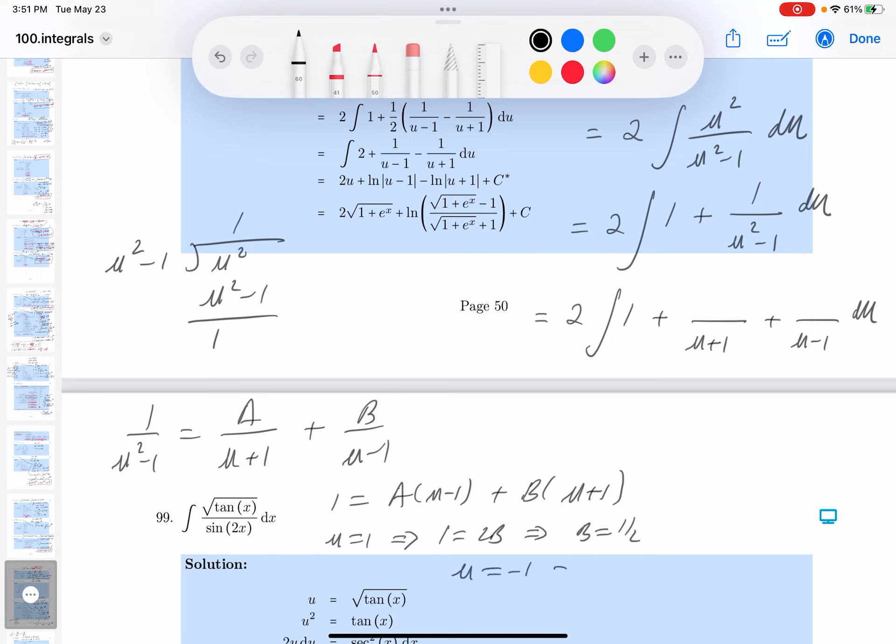I'm going to pick u to be minus 1. What do you get there? You're going to get minus 2A where A is minus 1/2. Alright, let's write that down. This will be minus 1/2 now, and this will be 1/2.